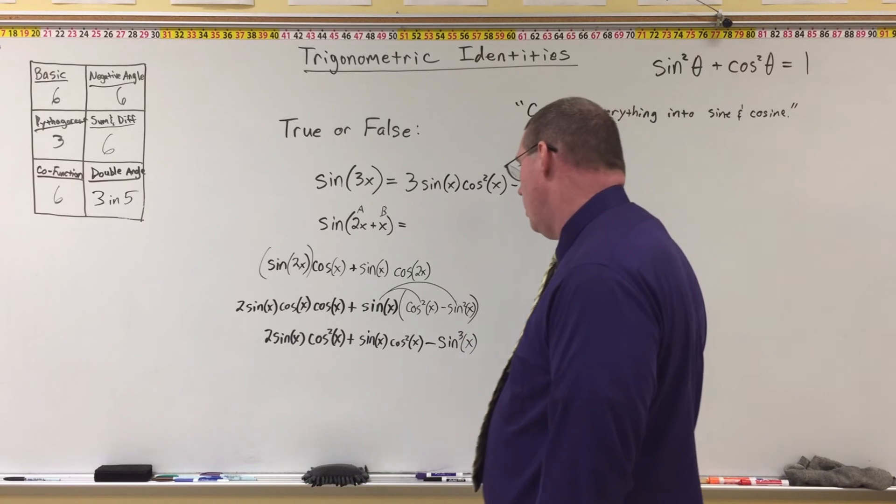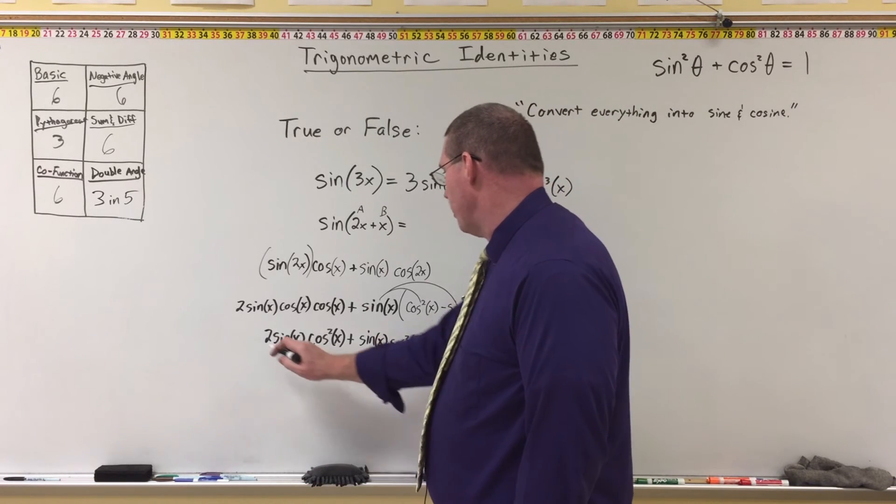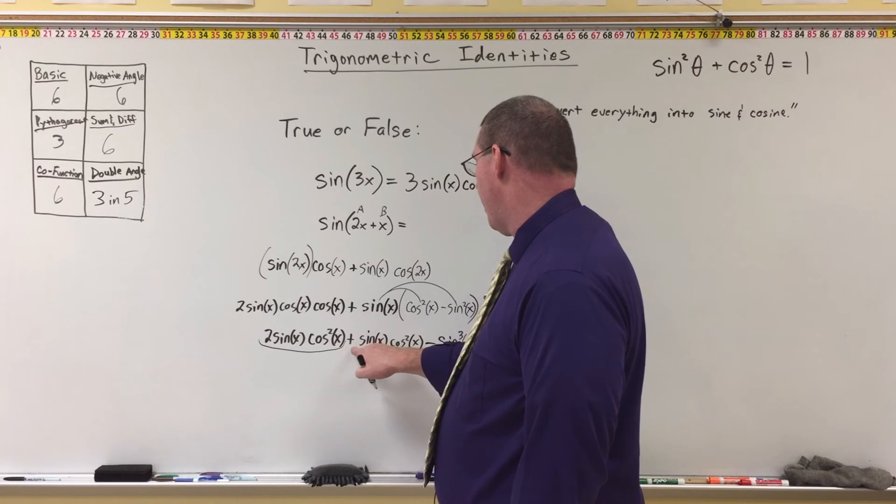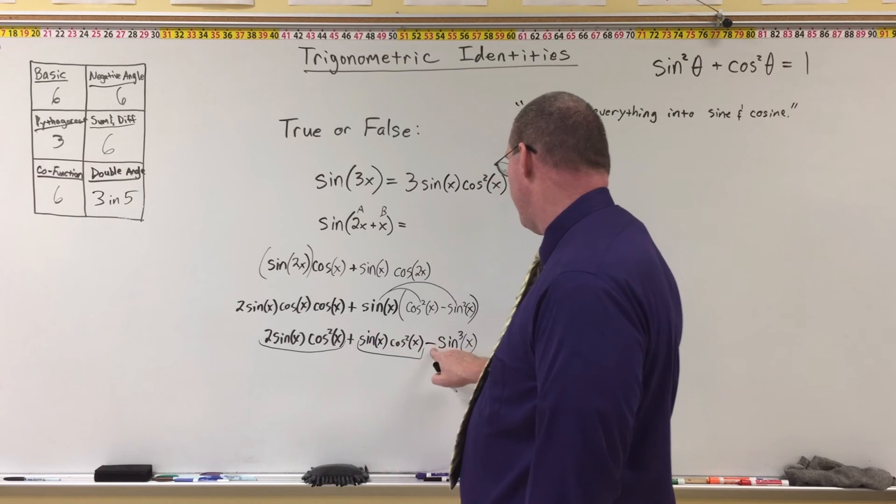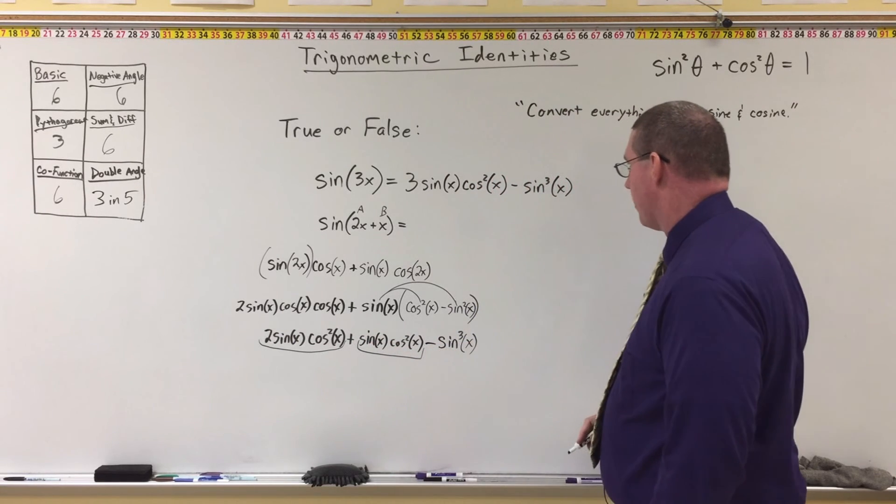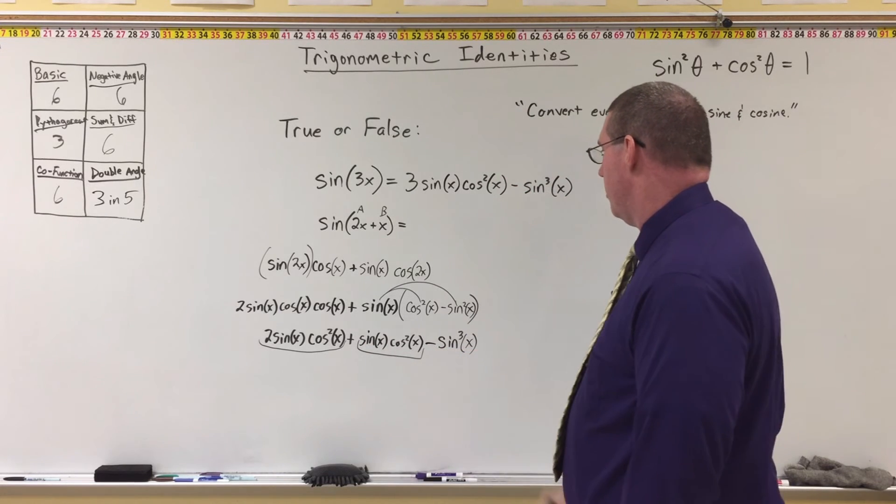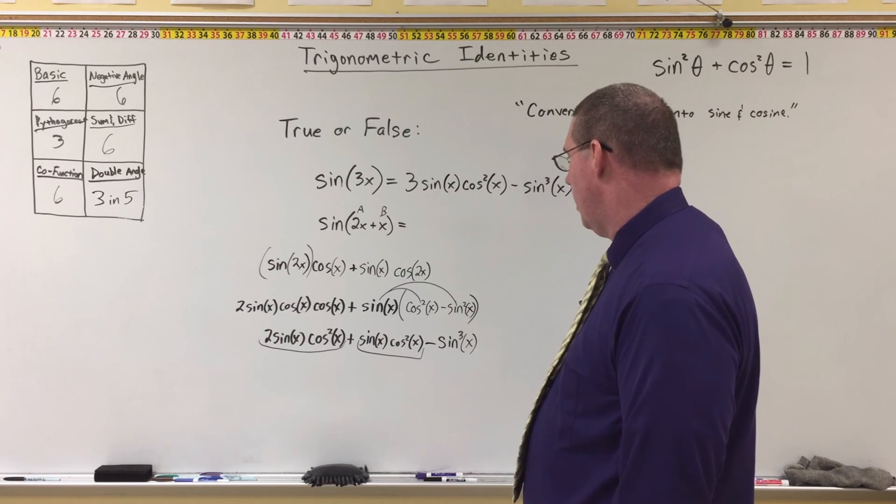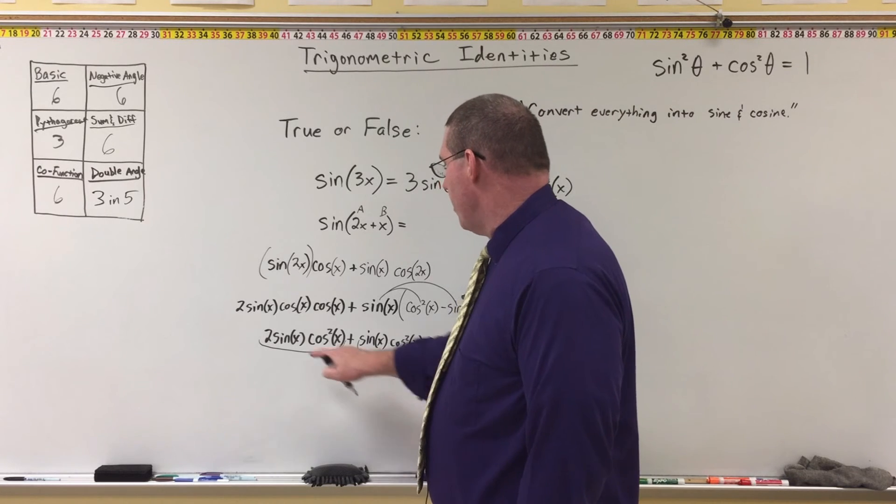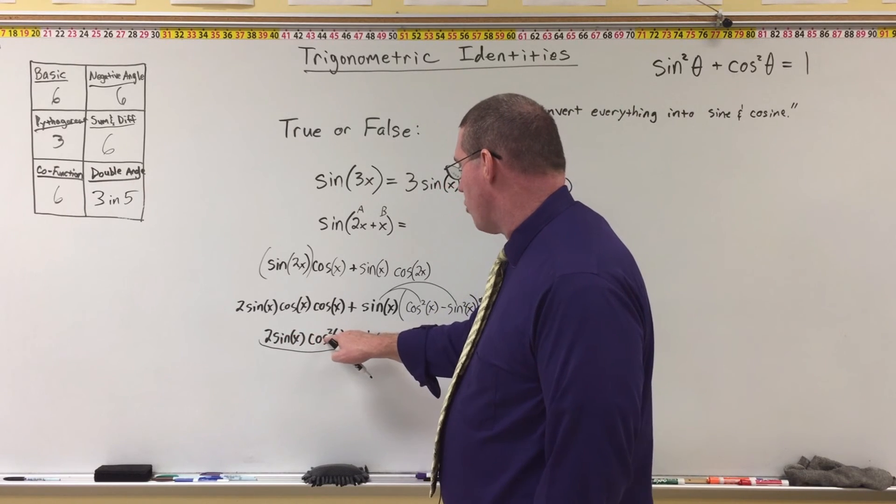And now, I want to show you something. We now have 3 terms. We have this term, then a plus, then this term, then a minus, then sine cubed of x. Well, look. This one ends with minus sine cubed of x. So we've already got a good deal there. And then look at this. This is sine of x times cosine squared of x.